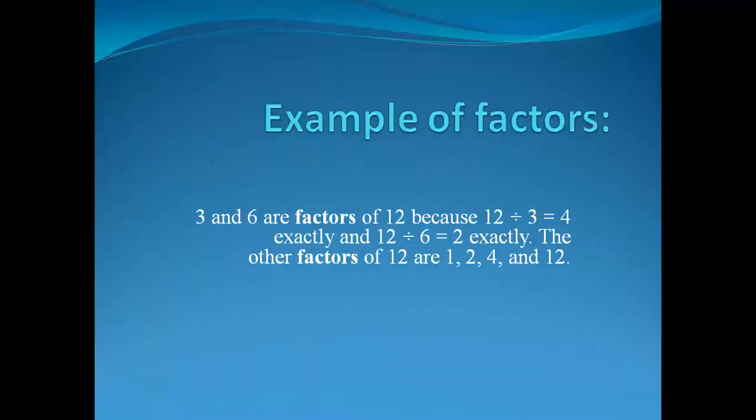For example, 3 and 6 are factors of 12. When we divide 12 by 3, we get 4 without leaving any remainder. When we divide 12 by 6, we get the answer 2. The other factors of 12 are 1, 2, 4, and 12.